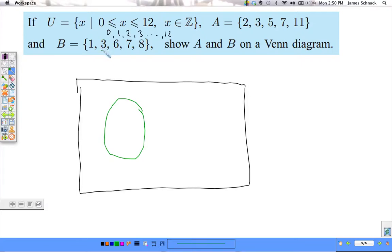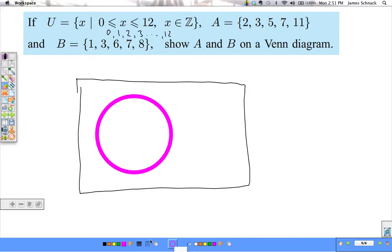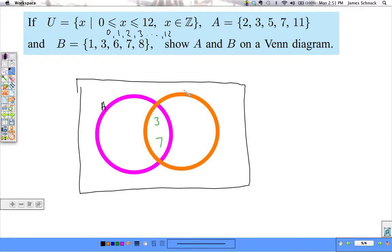But, notice, there's a couple numbers. 3 and 7 that show up in both of these. So, what we can do, what we need to do, is we need to have our circles overlap each other. So, there's one circle, and there's another circle. Because, in this problem, 3 and 7 belong to both set A and set B. So, we've got the 3, we've got the 7 in both.